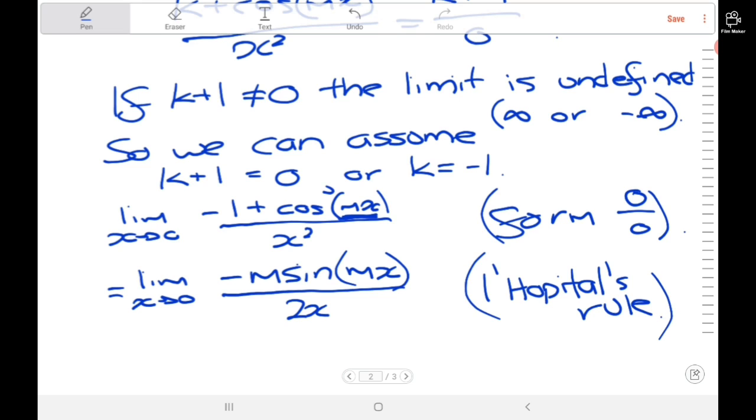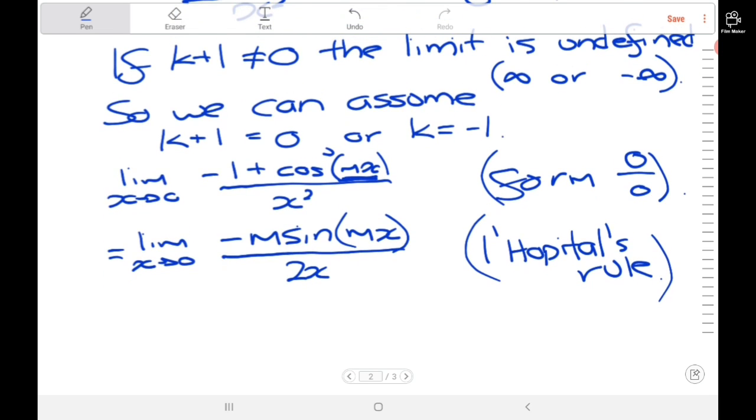If we substitute 0 into this new limit, we get sine of 0, which is 0. Multiplying by negative m doesn't change that. In the denominator, 2 times 0 is 0. So this is still of the form 0 over 0.